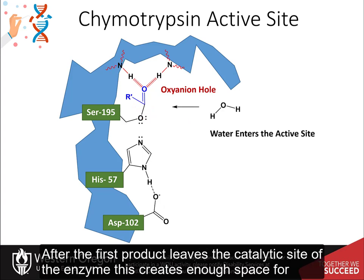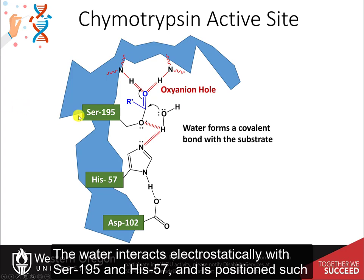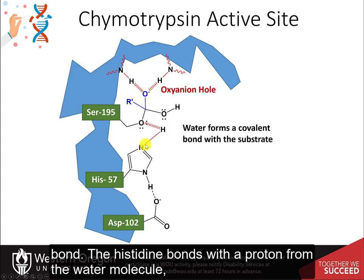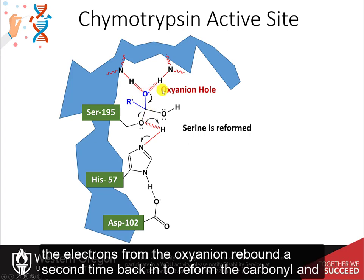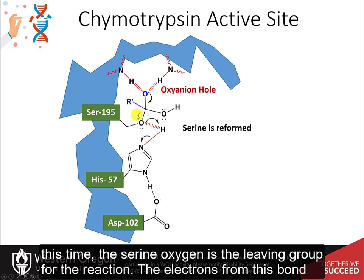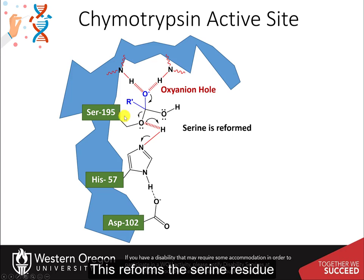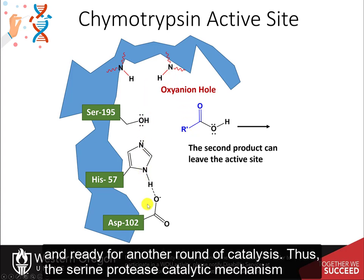After the first product leaves the catalytic site, this creates enough space for water to enter the active site. The water interacts electrostatically with serine-195 and histidine-57 and is positioned such that the oxygen can act as a nucleophile at the carbonyl-carbon center, forming a covalent bond. The histidine bonds with the proton from the water molecule, and the oxyanion intermediate forms for a second time. The electrons from the oxyanion rebound a second time to reform the carbonyl, and this time the serine oxygen is the leaving group. The electrons capture the proton from the water molecule coordinated by histidine, reforming the serine and histidine residues. The second product leaves the active site and the enzyme is restored and ready for another round of catalysis.